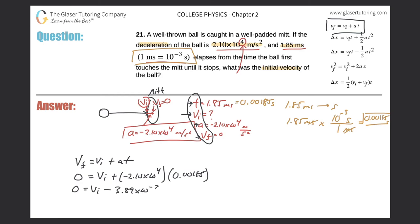Since I corrected them everywhere, let's finally calculate this initial velocity correctly. Now I'm going to multiply these two numbers. Negative 2.10 times 10 to the fourth times 0.00185. I'm always constantly checking. This should be minus 38.9.